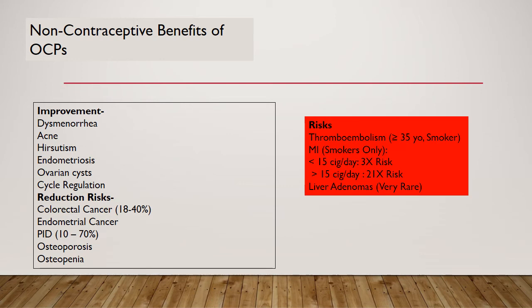The pill has also shown a 50% reduction in dysmenorrhoea and abnormal uterine bleeding. The RCOG recommends the pill to reduce pain and size of lesions prior to surgery for endometriosis. A recent case-control study comparing BRCA1 and BRCA2 mutation carriers with controls showed that the combined oral contraceptive pill prevented ovarian cancer in this high-risk group. It has also been shown to reduce risks of endometrial cancer, pelvic inflammatory disease, osteoporosis, and osteopenia.